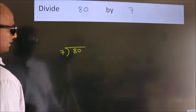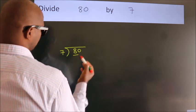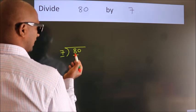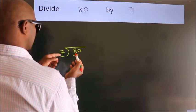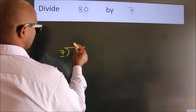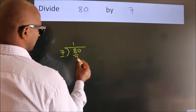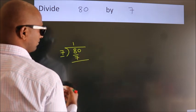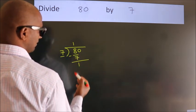Next, here we have 8, here 7. A number close to 8 in the 7 table is 7 once 7. Now we should subtract, we get 1.